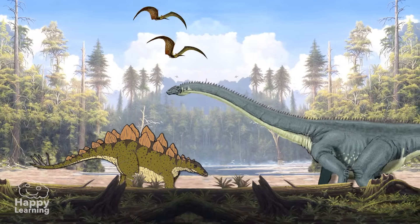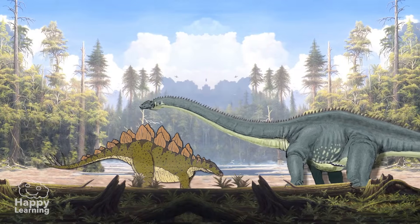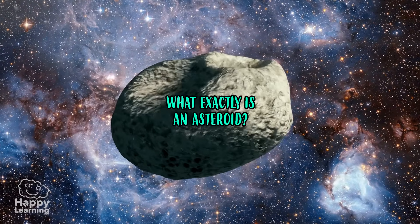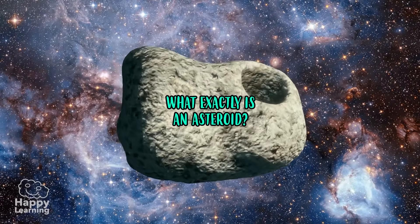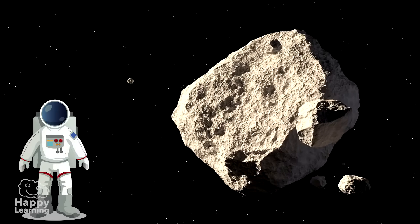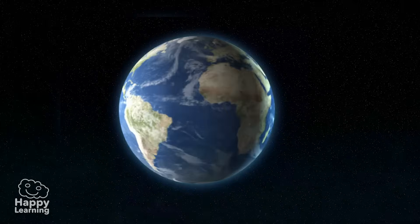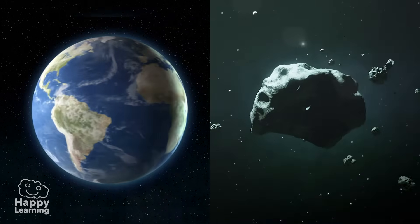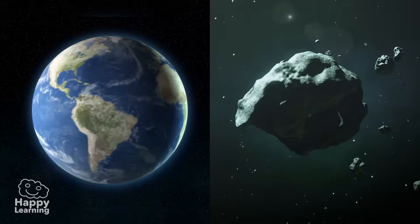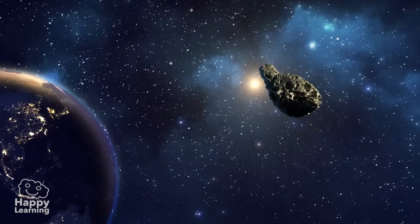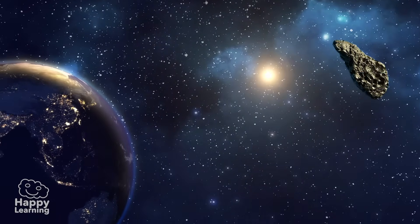And made all dinosaurs disappear. But what exactly is an asteroid? According to NASA, asteroids are small rocky objects which, as well as the planets, orbit the Sun, meaning they rotate around it. They are a lot smaller than planets.